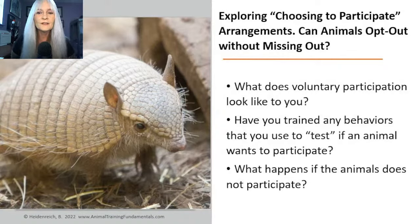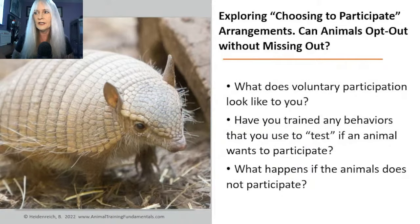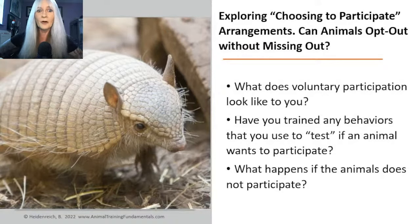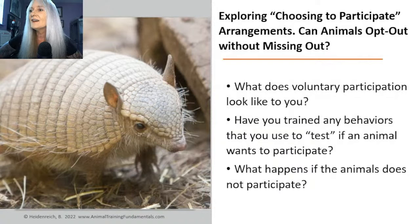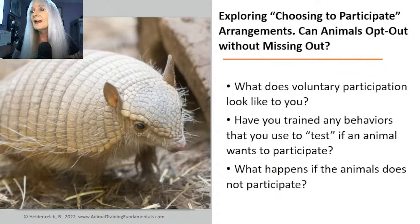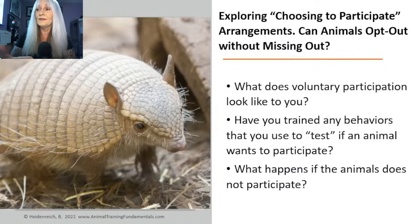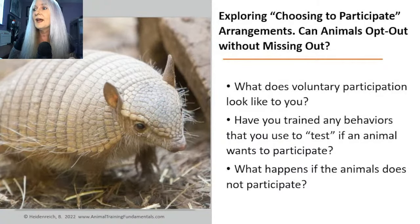As we started exploring these questions, different animals had different configurations — it wasn't the same for every situation. Part of it was about natural history of species. For a striped skunk: to be picked up he had to hunker; if he moved, they wouldn't pick him up. To do an encounter he had to kennel; if he didn't kennel, that might mean he wasn't motivated that day.